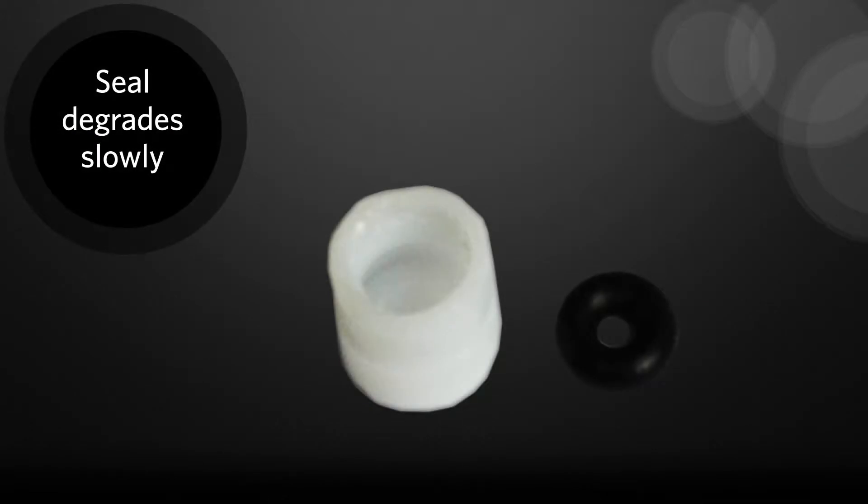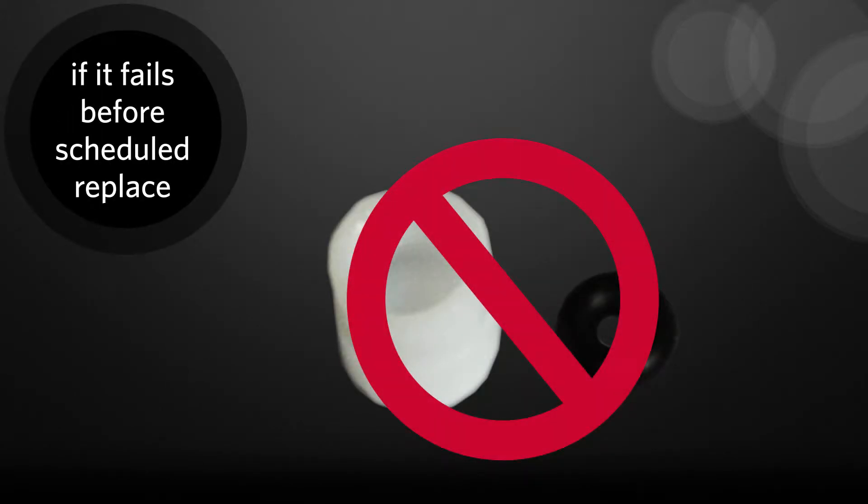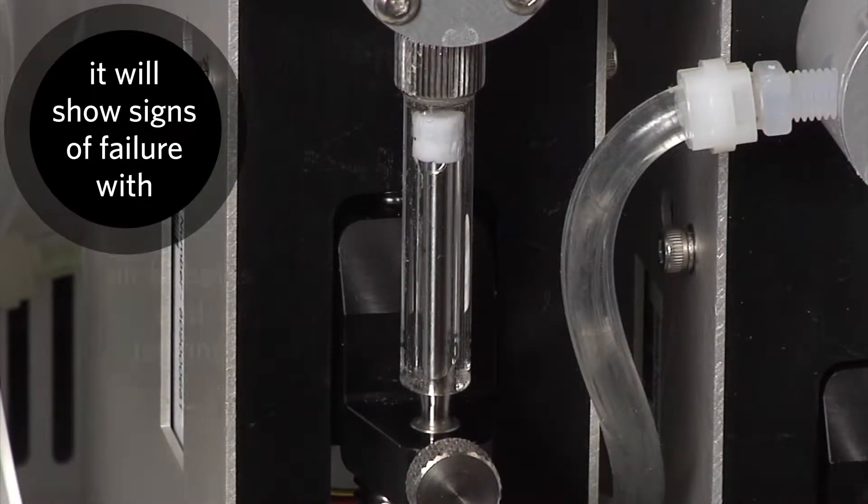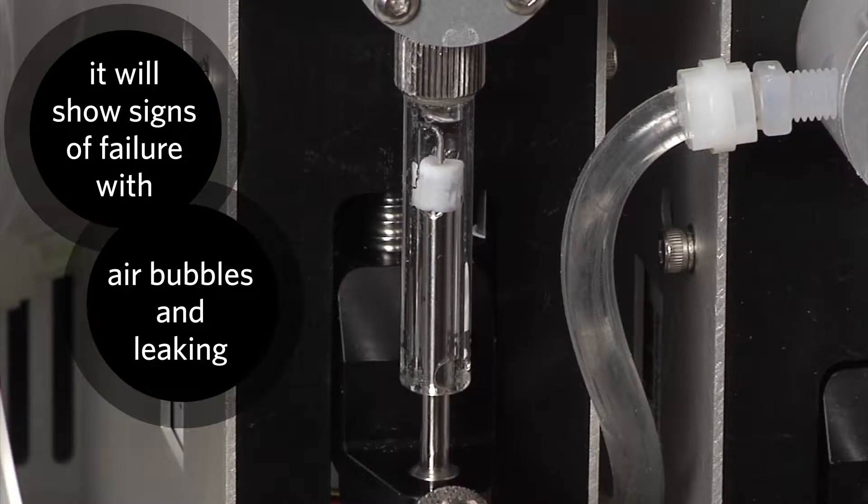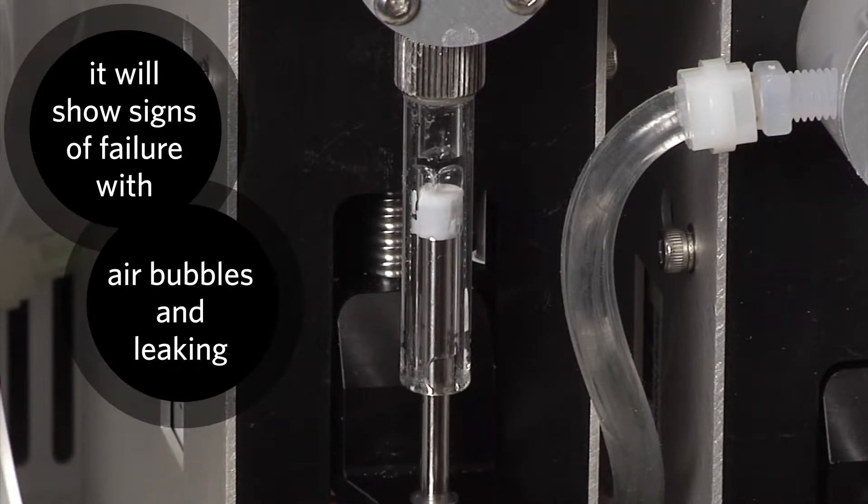In normal use, the seal will degrade slowly. If the seal does fail before the scheduled replacement, the two most obvious signs will be air bubbles in the syringe cylinder and liquid leaking from the syringe assembly.